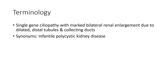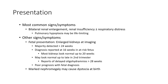The synonym is infantile polycystic kidney disease. The most common signs and symptoms are bilateral renal enlargement, renal echogenicity, plus or minus respiratory distress, pulmonary hypoplasia, and Potter sequence. Fetal presentation is unlikely before imaging maturity, with diagnosis typically after 24 weeks, though it has been reported as early as 16 weeks. Most kidneys look normal up to 20 weeks.